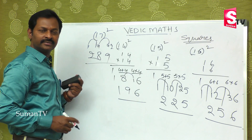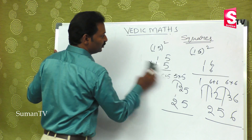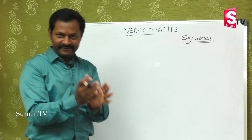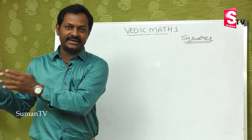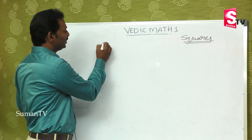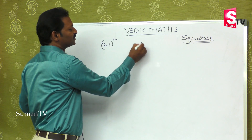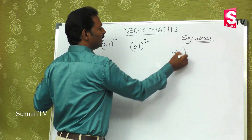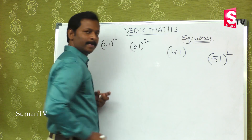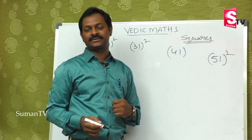The same method works in reverse for numbers ending in 1, like 21, 31, 41, 51, and up to 91. These are the reverses of 12, 13, 14, 15 and so on. So for 41 square or 51 square, we apply the same method in reverse.